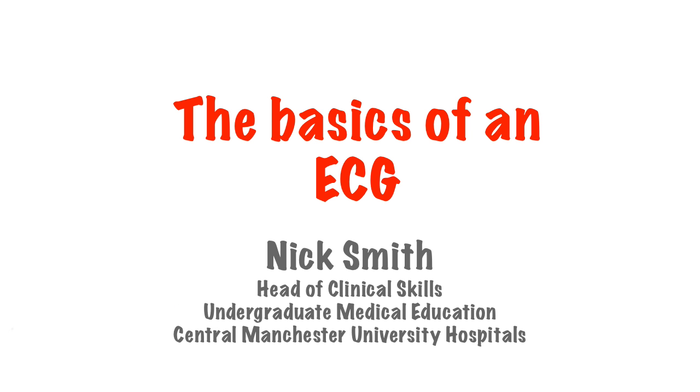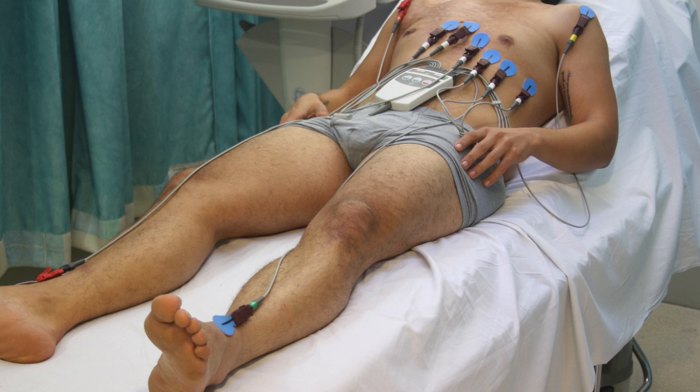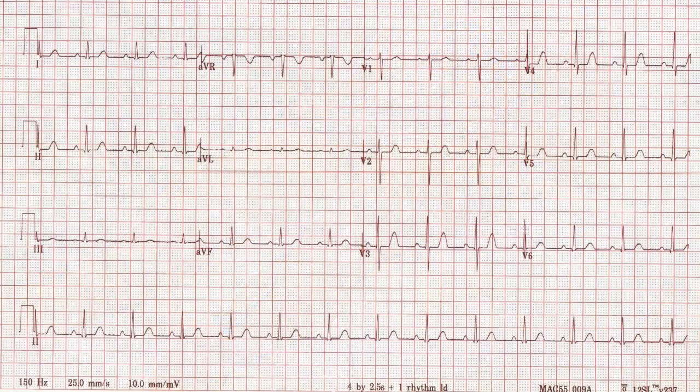Hi, my name is Nick and welcome to this short lecture on the basics of the ECG. The ECG picks up the electrical activity of the heart via a series of electrodes placed on the limbs and chest. The impulses from the heart are then turned into an electrical signal and recorded on an ECG in a series of tracings.